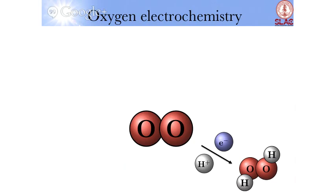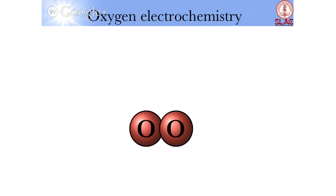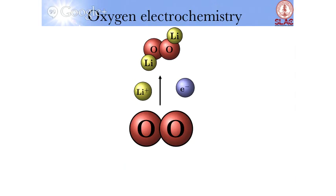Now one could do one other chemistry with oxygen. You could do this with lithium and electrons and form lithium peroxide. This is really important because this forms the discharge cycle of a lithium oxygen battery, and hopefully a lithium air battery.